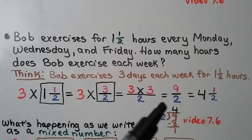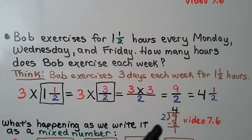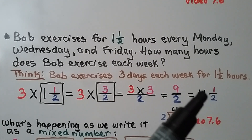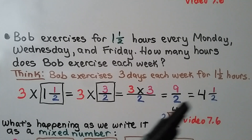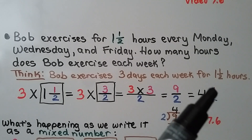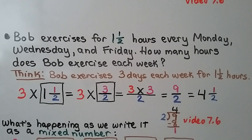We can put this in simplest form by thinking 9 divided by 2. 2 can fit into 9 four times, so that's our whole number — 4, the quotient. And 2 times 4 is 8, we have 1 left over — 1 remainder. That remainder becomes the numerator, and we use the same denominator. We have 4 and a half.